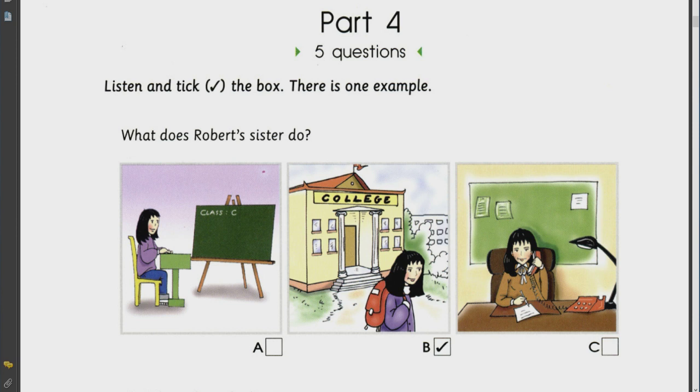So, let's start doing this exercise. Read the task. Listen and tick the box. Good. Read one example. Good. Read the question. What does Robert's sister do? Good.